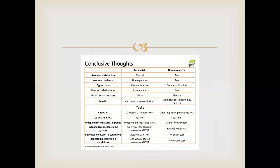In conclusion: the central measure for parametric tests is mean, whereas the central measure for non-parametric tests is median. For testing correlation — parametric uses Pearson correlation coefficient; non-parametric uses Spearman Rho. For independent measures of two groups, use unpaired Mann-Whitney U test. For more than two groups, use ANOVA for parametric and Kruskal-Wallis for non-parametric.